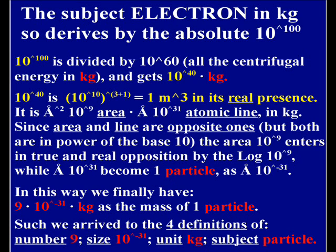Multiplied Angstrom 10 rise to 31 as atomic line of the kilogram in action, as flow. Since area and line of action of the mass are opposite ones.